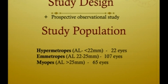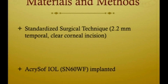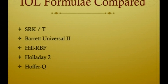This was a prospective observational study. 22 eyes were in the hypermetropic group, 107 eyes in the emetropes, and 65 eyes in the myopic group. A standardized surgical technique was performed in all cases with a 2.2 mm temporal clear corneal incision, and the IOL SN60WF was implanted. The IOL formulas compared were SRKT, Barrett Universal II, Hill RBF, Holaday II, and Hoffer Q.